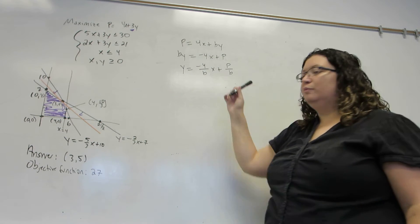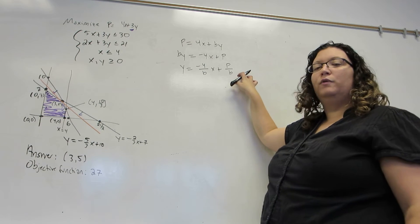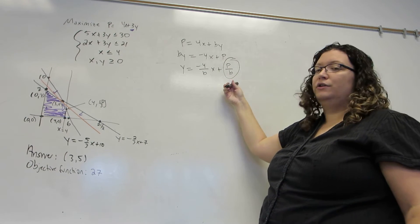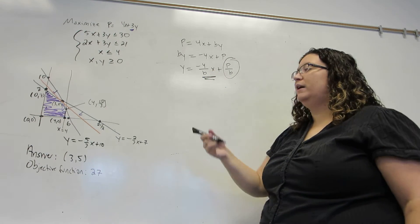Now, there are b's in two places, but since I don't happen to know what b is, since we're going to be changing it, we're going to ignore the y-intercept and just focus on the slope as we did last time.